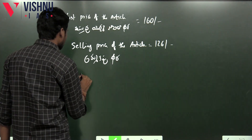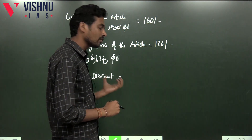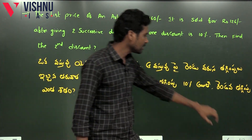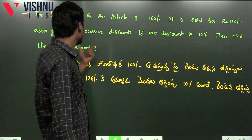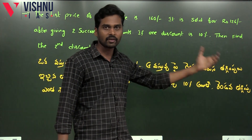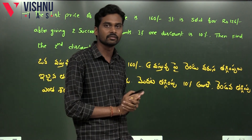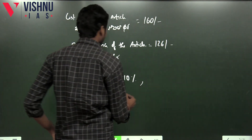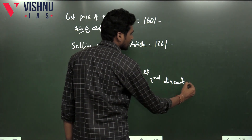Next, we note the discount percentage. First discount percentage — you represent it clearly. The first discount is 10%. So one discount is 10%. Then find the second discount. The first discount is 10% on the list price of 160 rupees. There are two successive discounts: first discount is 10% and second discount is D%.